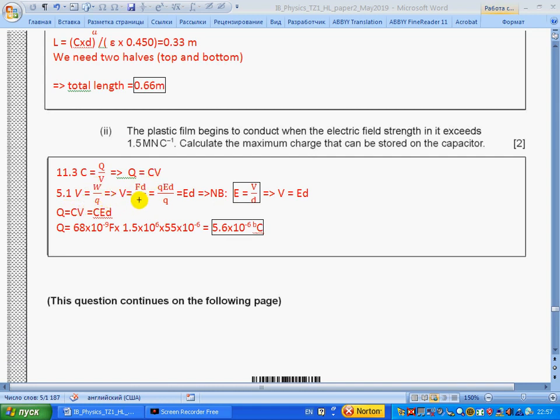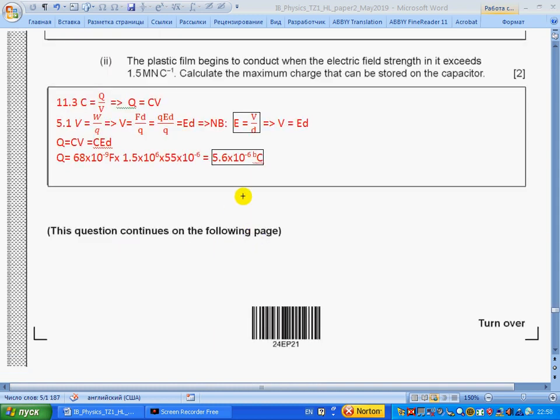Part ii: The plastic film begins to conduct when the electric field strength in it exceeds a given value. Calculate the maximum charge that can be stored on the capacitor. Section 11.3: capacitance equals charge over voltage, so charge equals capacitance times voltage. Section 5.1: voltage equals work over charge. Voltage equals force times distance. Force is qE, so we get voltage equals Ed. Field strength is constant—remember this formula for parallel plate capacitor: field strength equals voltage over distance between plates.